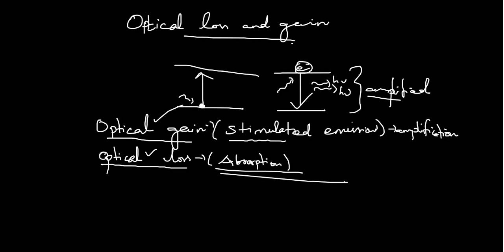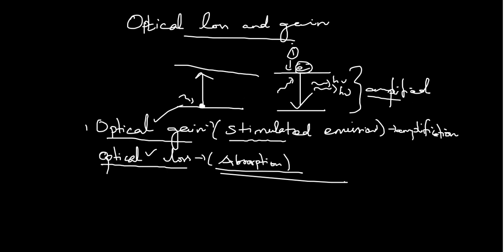Optical gain is related to the stimulated emission process. In the optical gain process, there are two energy levels — a lower and a higher energy level, E1 and E2. An electron in the excited state absorbs a photon and comes down by emitting two photons. Those two photons in turn produce four photons, and so the amplification goes on — hence it is related to optical gain.